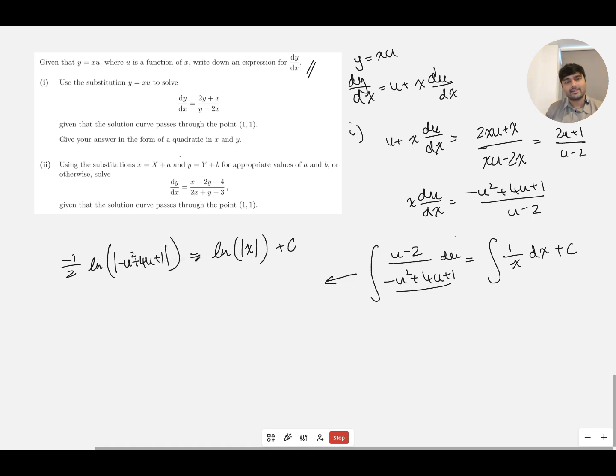And I don't need a plus c on the left-hand side, because if I had a constant here, c1 and c2, I could just merge them together and create a new constant and call that c. So we have this here. And very nicely, we've got lots of ln. So by rearranging this, we get |-u² + 4u + 1|^(-½) equals a times the absolute value of x, where here I've called ln(a) where a is e^c.